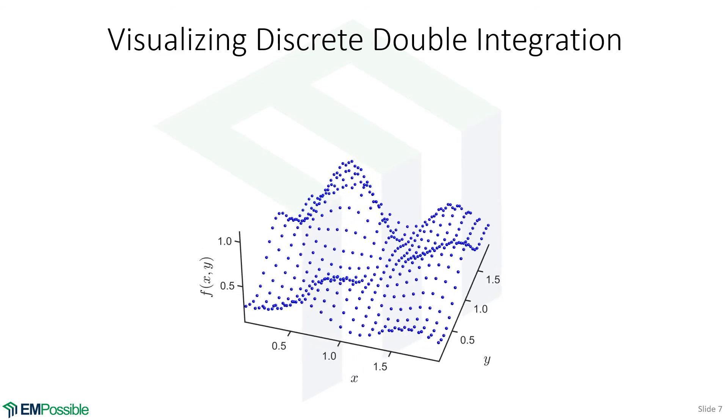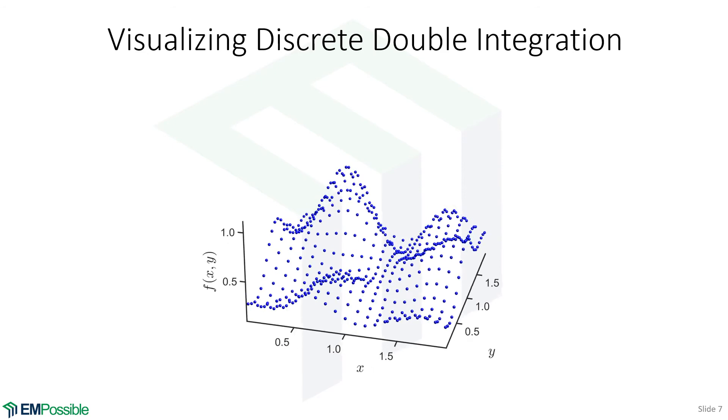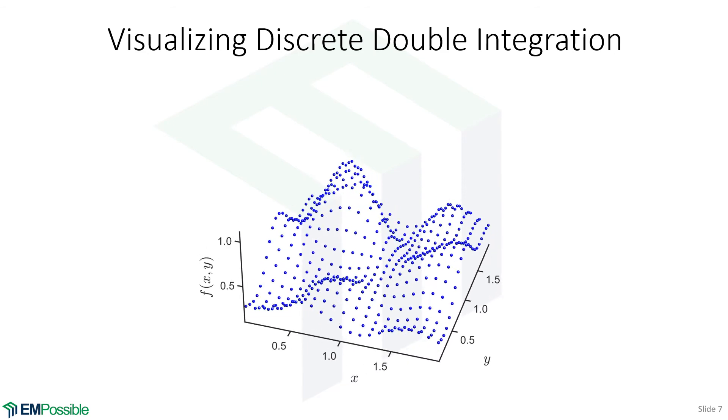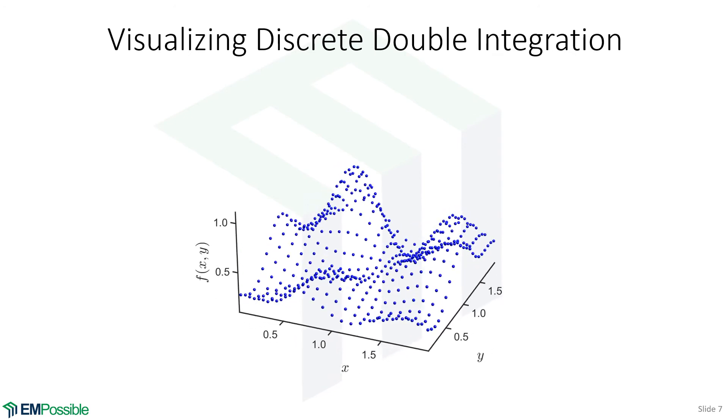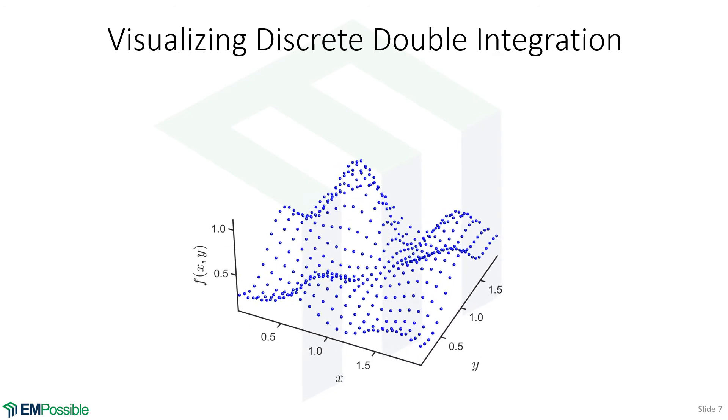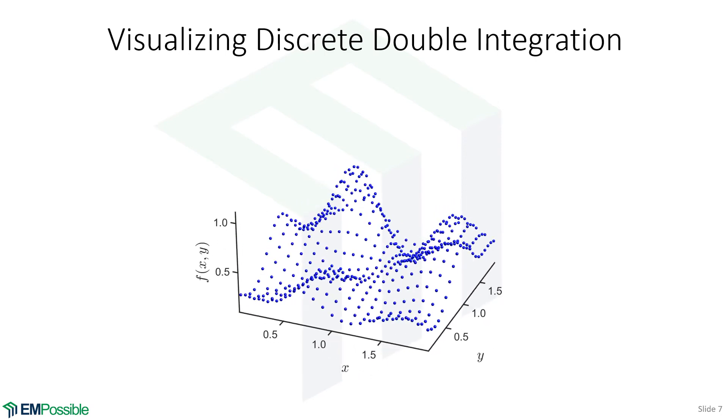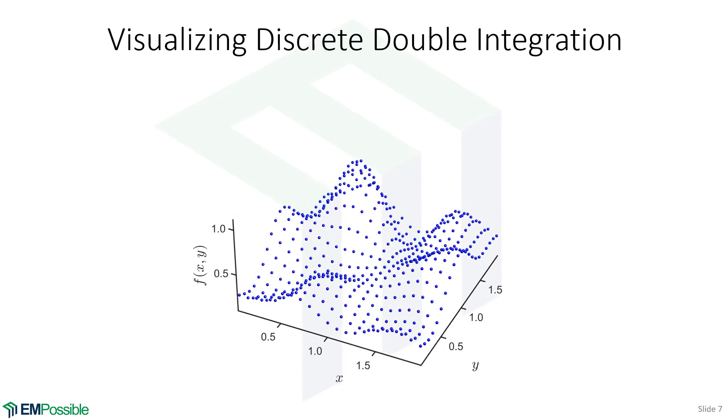More realistically, this is what is stored in memory. We don't know what that function is between those points. Now, we can make some guesses with interpolation or averaging or other things like that. But this is all that's known. And so we have to somehow come up with the volume of area under that curve.